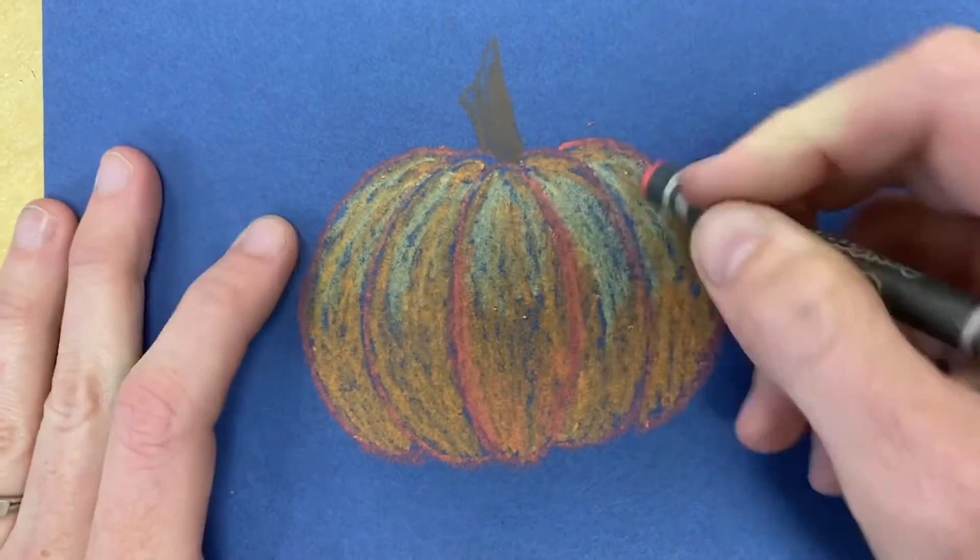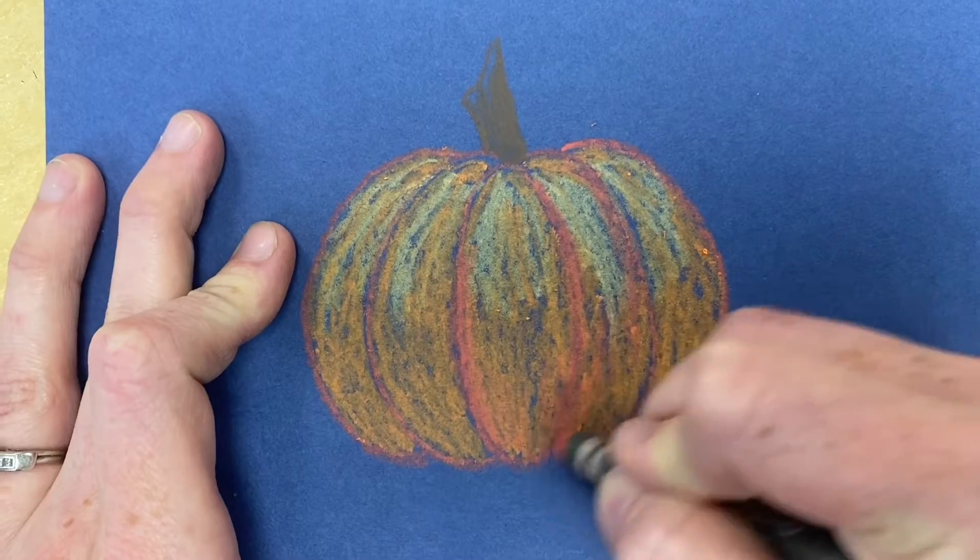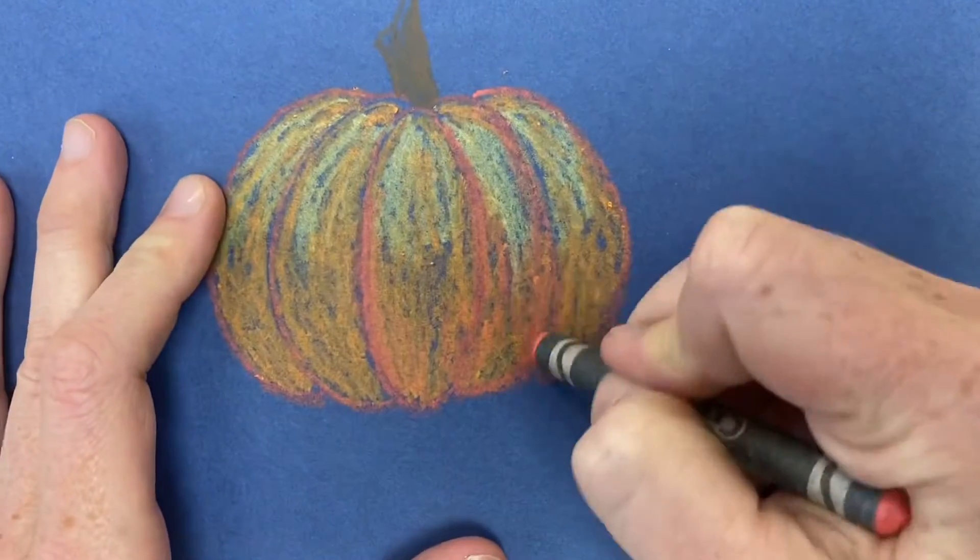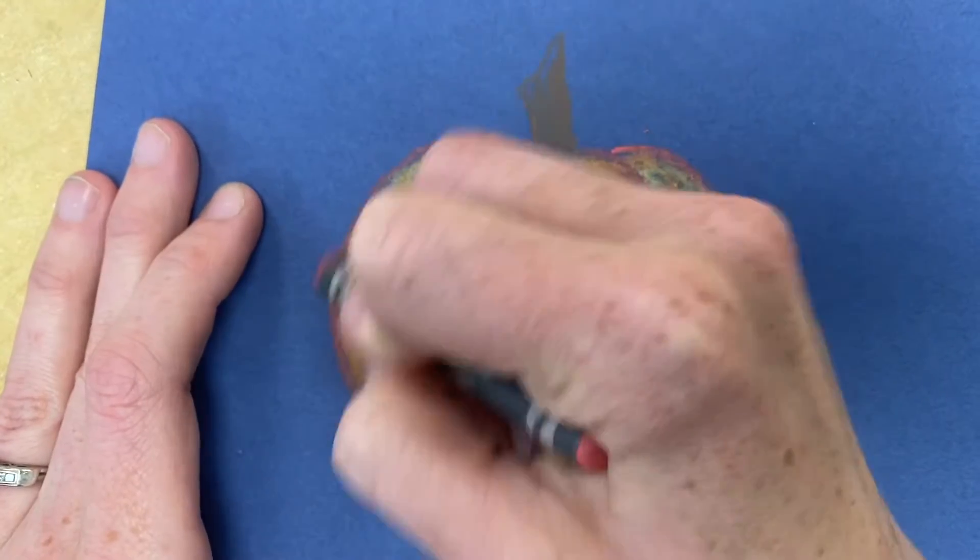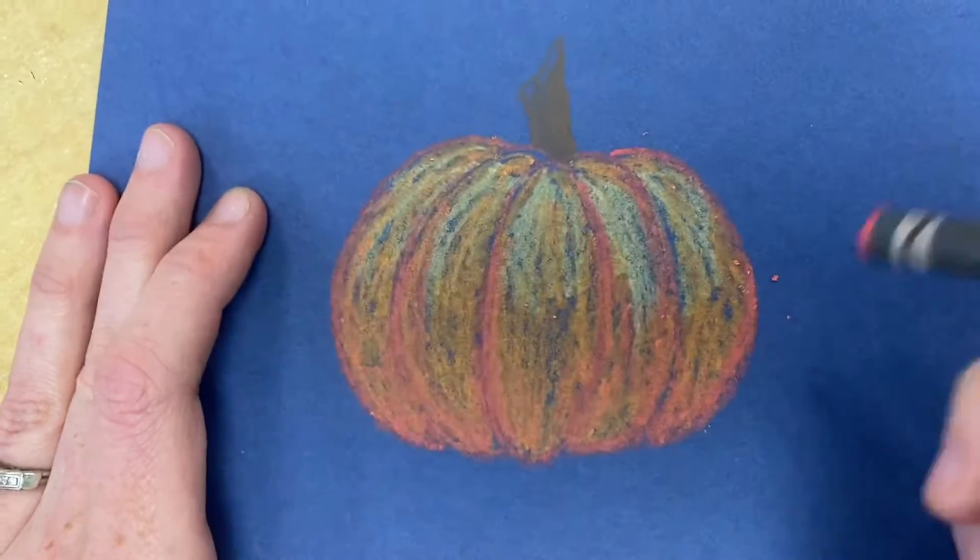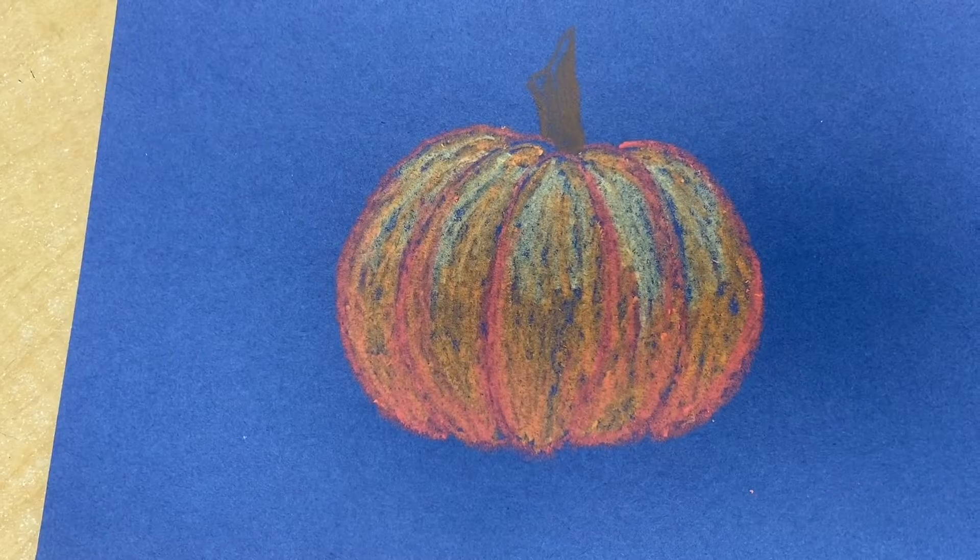It's good to color each section separately so you can still see the definition there. You can also go back with a darker color and make your lines show up more so your pumpkin looks like it actually has some form that goes in and out.